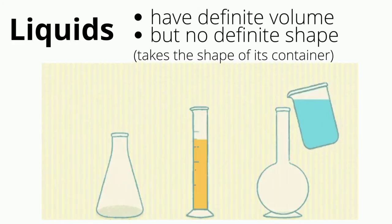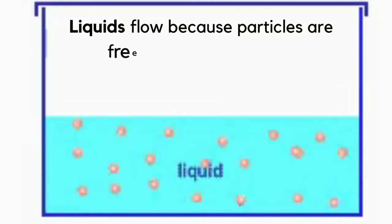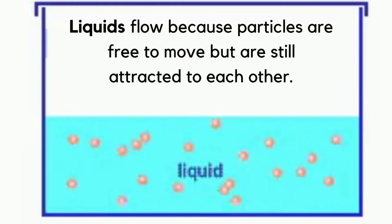Liquids have definite volume but no definite shape, and take the shape of their container. Liquids flow because particles are free to move but are still attracted to each other.